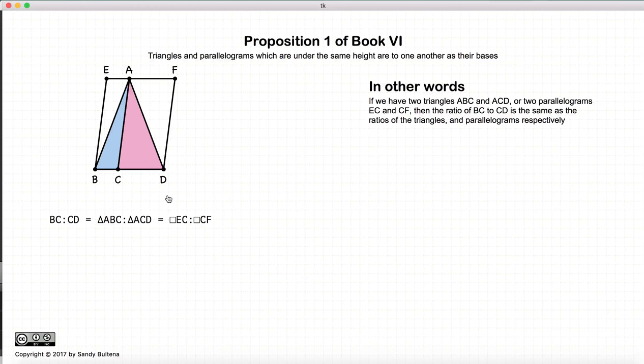This video presentation is going to be on Proposition 1 of Book 6. Now this proposition states that if I have two triangles which have equal height, then the ratio of the area of the two triangles will be equal to the ratio of their respective bases.